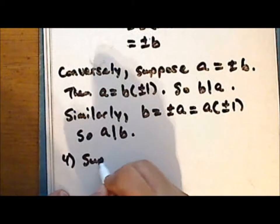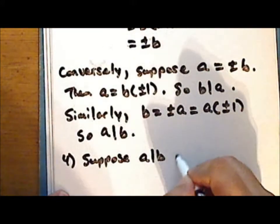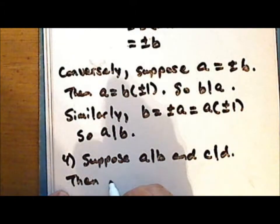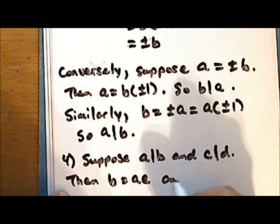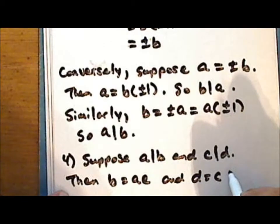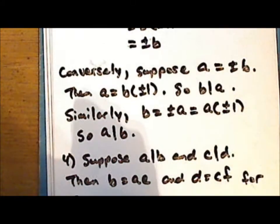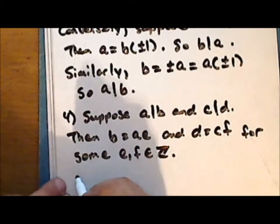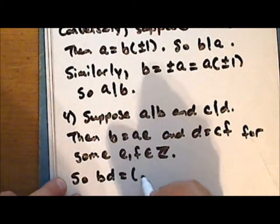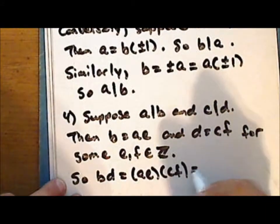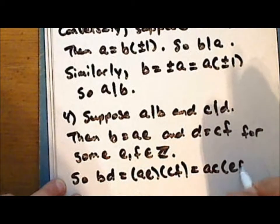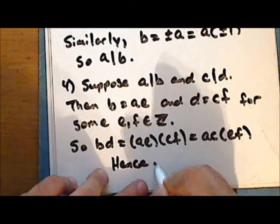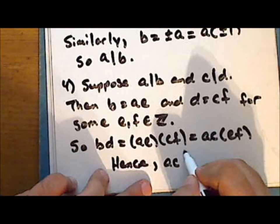Fourth statement: suppose that a divides b and c divides d. Then b is an integer multiple of a and d is an integer multiple of c. And so the product b times d equals a times e times c times f, which is the same as ac times ef. So bd is an integer multiple of ac, and hence ac divides bd.